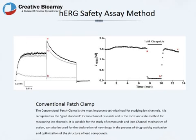Conventional patch clamp is used for a small number of compounds, or compounds identified with automated patch clamp. The conventional patch clamp is the most important technical tool for studying ion channels. It is recognized as the gold standard for ion channel research and is the most accurate method for measuring ion channels.